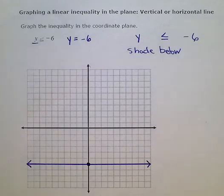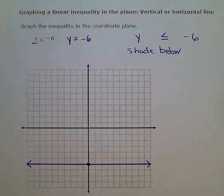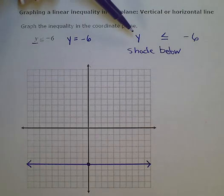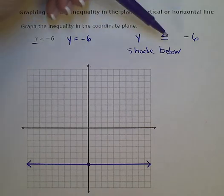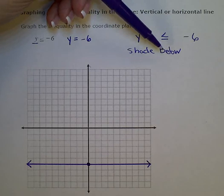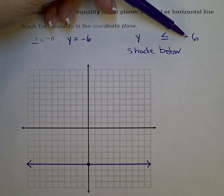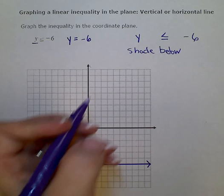If it was greater than or greater than or equal to, I would think to myself, above. So where I see y, I think shade. Since this is less than, I think below, and the negative 6 represents my line, my boundary line.